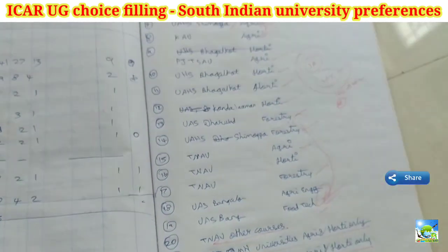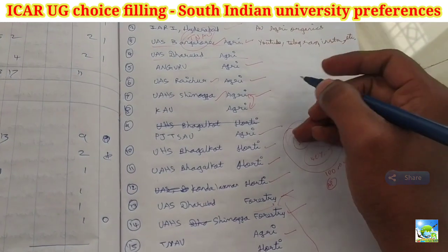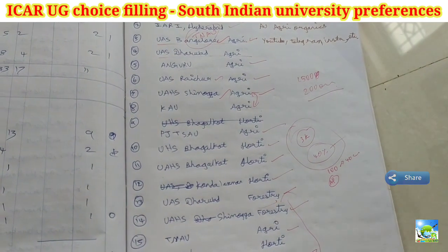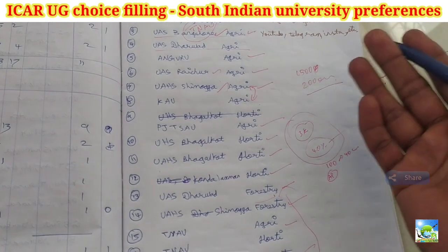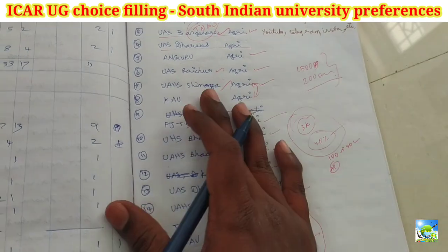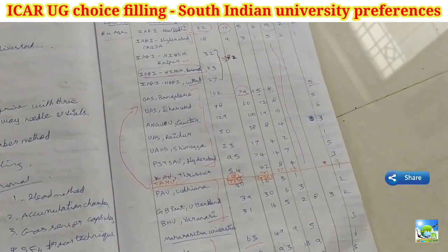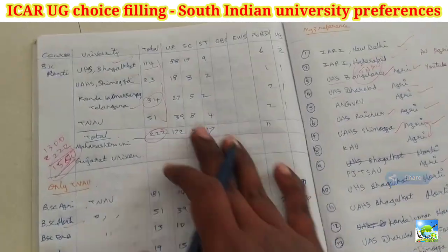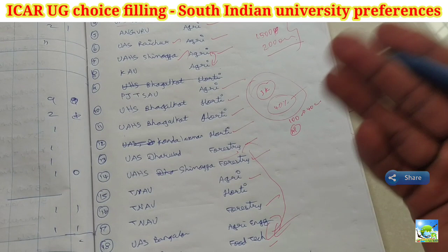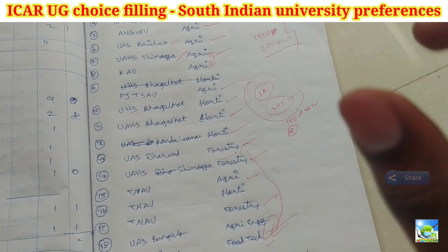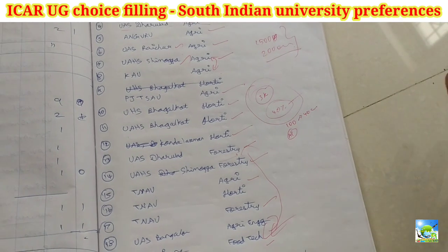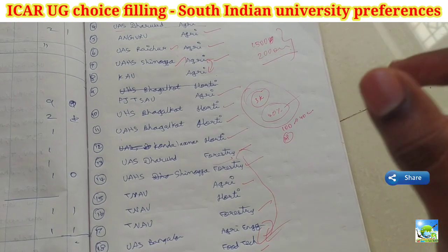These are my choice preferences and suggestions for everyone based on my knowledge. Many people have gotten good ranks — 1500 overall rank, 200 overall rank — and shared good news. This can be guidance for next year's batches as well. This has been the BSc Agriculture-based preference, the TNAU-based preference, and my overall preference. One final important thing: do not give preference to any college or university just because I, the You Agree Organics admin, am associated with it. Everything should be entirely as per your own convenience and preferences.